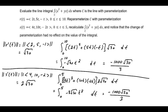Notice that the parameterizations r of t and s of t have the same beginning and ending point. The difference is s of t travels twice as fast, which makes sense that the line integral would, in fact, be the same. Reparameterizing had no effect on the value of the integral.